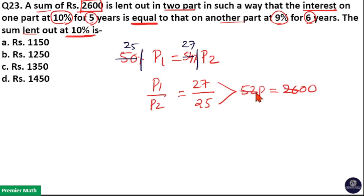Now 26 goes 2 times in 52, 2 goes 50 times in 100. That is, 1 part is equal to 50. Here we need to find out sum lent out at 10 percentage.